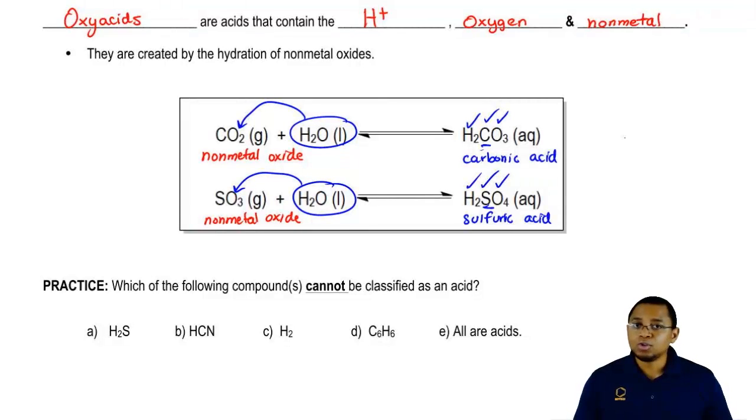Now that you guys have seen the two types of acids, binary and oxy, I want you guys to try to answer the next following question. Here I say: which of the following compound or compounds cannot be classified as an acid? I gave you just brief descriptions on both. Try to use your best judgment to determine which ones could be and which ones could not be. Then once you're done with that, click on the explanation button. You'll see a video of me explaining how to approach this problem. Good luck.